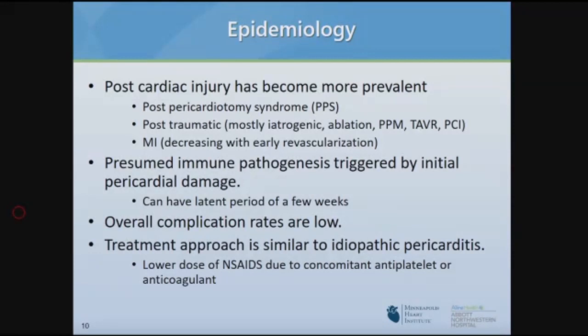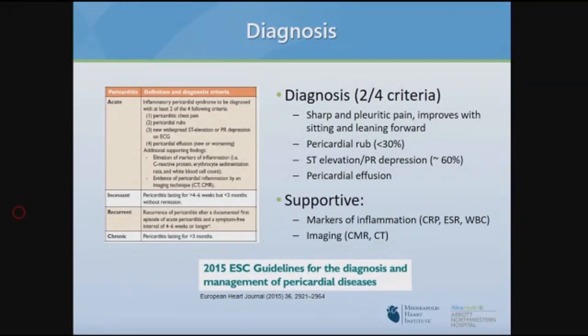Post-cardiac injury pericarditis is presumed to be immunogenic because there can be a latency period of one to two weeks after the injury — it's not the injury itself per se. The overall complication rates are still low. The treatment approach is similar to other pericarditis, often with lower-dose NSAIDs and colchicine, partly because patients are often already on antiplatelets or anticoagulants.